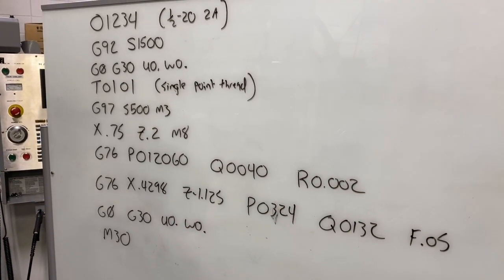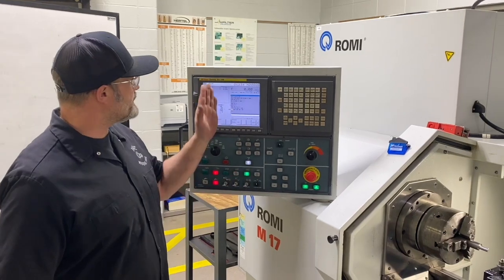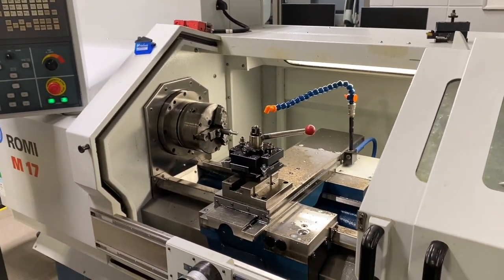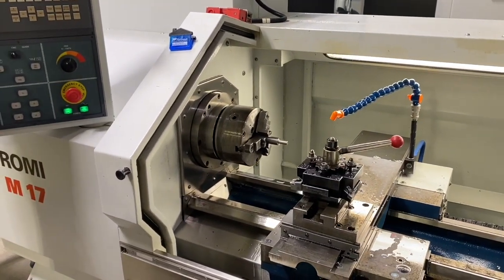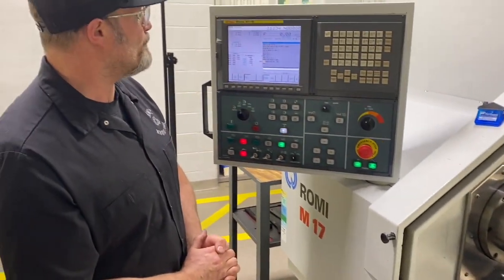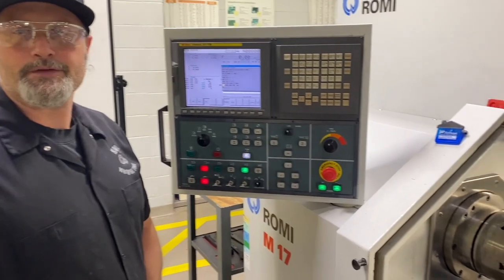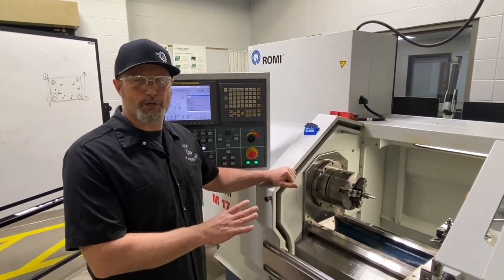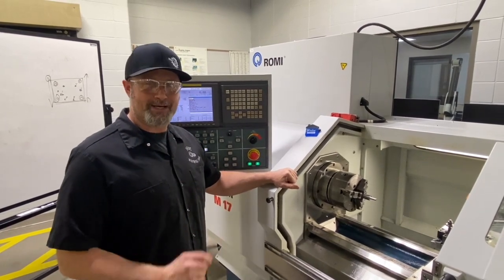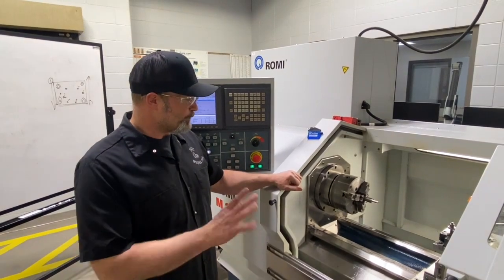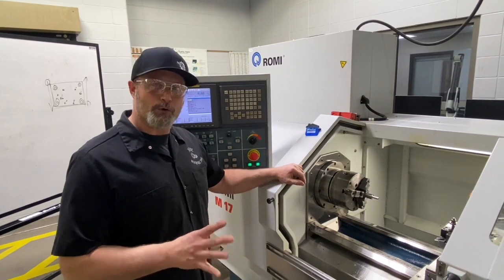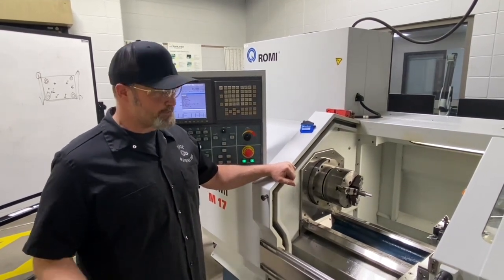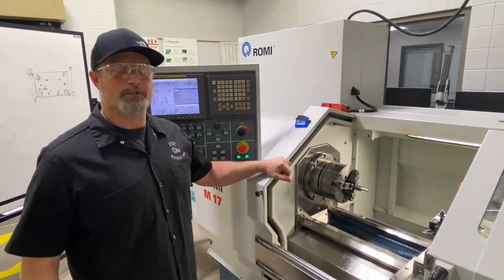We're at the machine here — this is our Fanuc 21i series control on a small tool room lathe. I've got the program loaded. The bar stock was already pre-machined and turned down to our major diameter from the machinery's handbook. We hit cycle start and cut the threads. Now we're up to the point of measuring — going back to the pitch diameters we found in our machinery's handbook. We made a video a few months back on how to measure threads with a couple of different methods — be sure to check that out. If you have any other questions, comments, or tips on single point threading, drop them in the comments below. We'll see you next time.